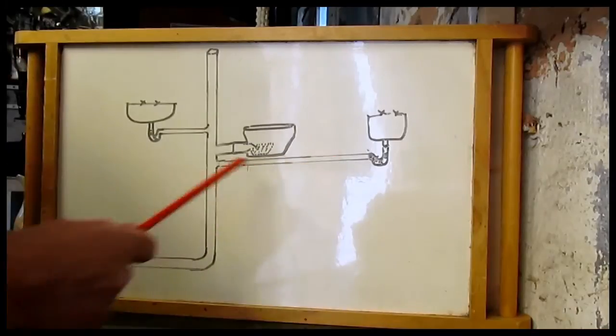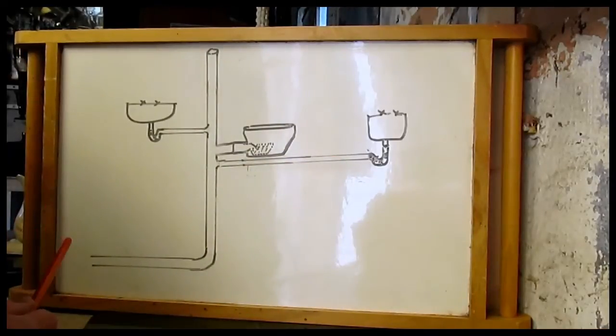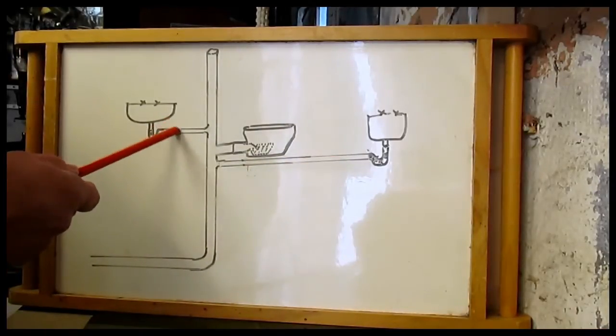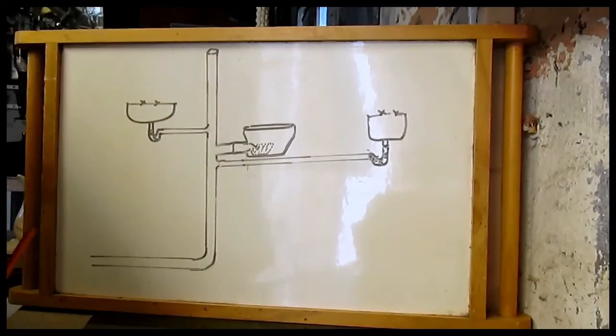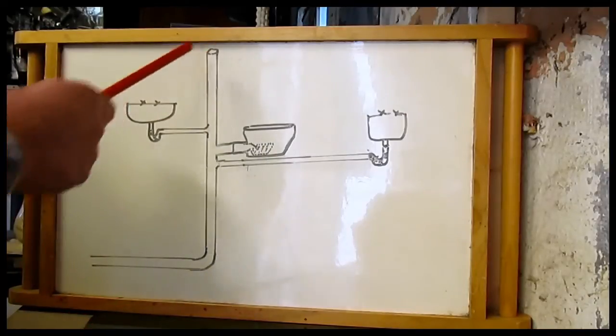A bath has always got to have an inch and a half pipe, which is 44mm, and a basin has always got to have 32mm pipe, which is an inch and a quarter. And the shorter the better. Right, so that's a typical installation with an open vent.